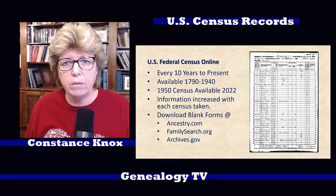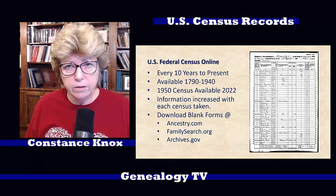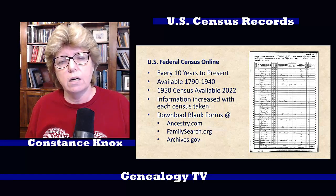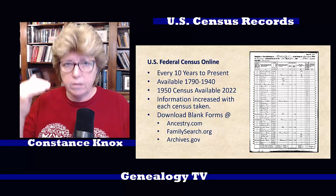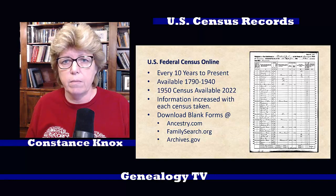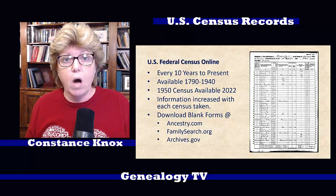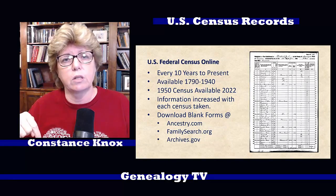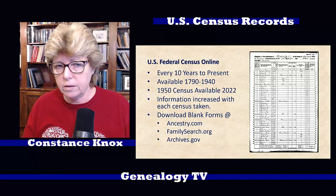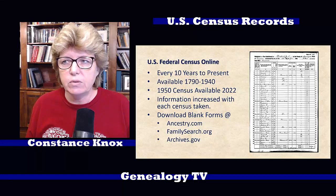I highly recommend that people download the blank forms, and there's a reason for this. You can find free copies of the blank forms for every year of the census from 1790, 1800, 1810 — I recommend you download them all. You can find them at Ancestry.com, FamilySearch.org, and Archives.gov. I'm going to put the links in the show notes underneath the video on YouTube. There's no obligation, no cost — they're all free.